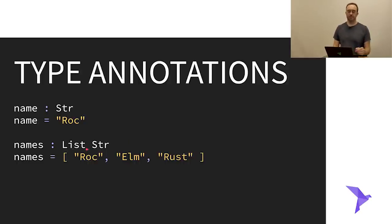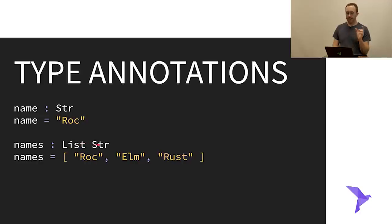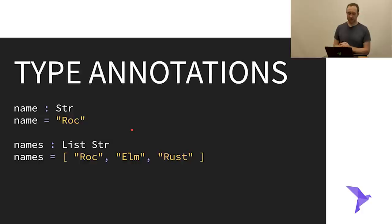`List Str` is a list of strings. Lists have a type parameter — you can't just say "I've got a list," you have to say a list of what. Every element in the list must have that element type. So you cannot, for example, have a mix of strings and numbers in the same list. That's not allowed.